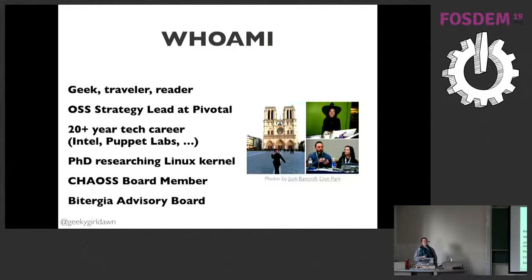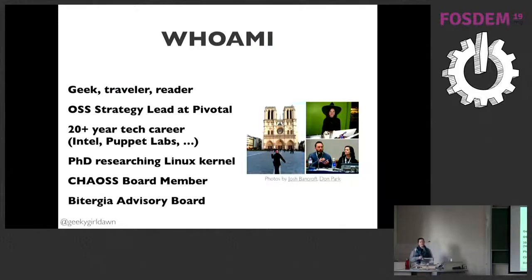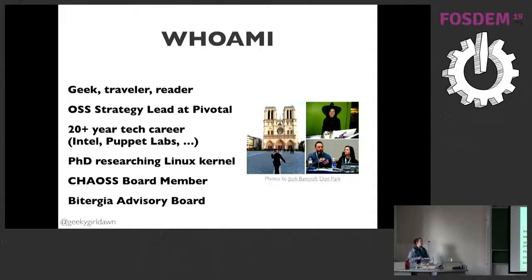I just finished a PhD, and as part of that work I did a whole bunch of analysis for the Linux kernel, mostly looking at mailing lists, but also at source code data and a few other things. I'm on the governing board and am a maintainer for the CHAOSS project, which is a Linux Foundation project based on community health metrics for open source projects.